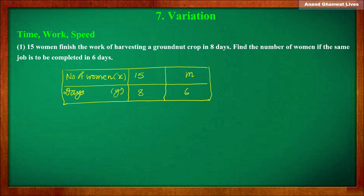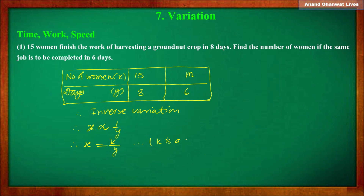Think about what happens if the number of women increases — the days required to complete the task will decrease. And if the number of women decreases, the days required will increase. Therefore it is inverse variation. So x is inversely proportional to y, and therefore x is equal to k upon y, where k is a constant.